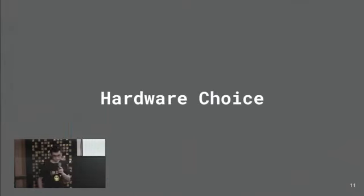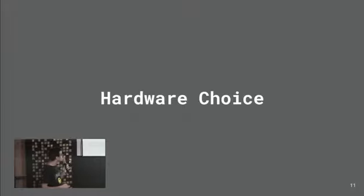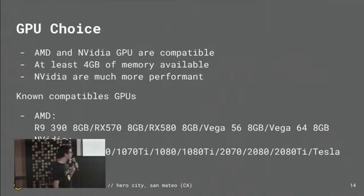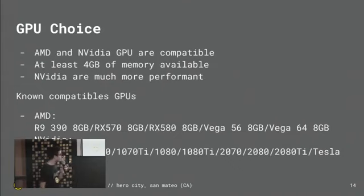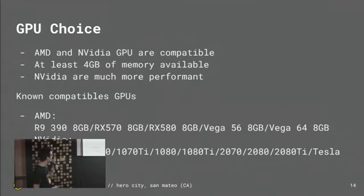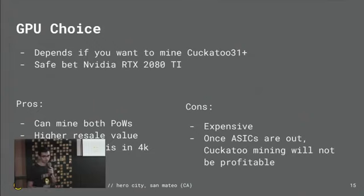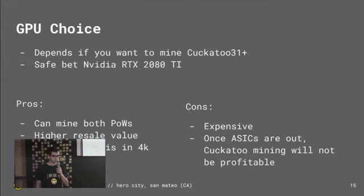Now we go to the hardware choice. Now that you know which proof of work you can mine and what kind of memory you need, let's look at hardware. For the CPU, forget it — it's not possible to mine with a CPU right now, it's a waste of time and energy. For GPU, you have a lot of choice: you can mine with AMD or Nvidia. Both work, but right now Nvidia is way more performant. The safe bet as of today is the Nvidia RTX 2080 Ti, because with this card you can mine both primary and secondary proof of work, so you can adapt to the market and always choose the most profitable option. Pros: mine both proofs of work, potentially higher resale value, can also game in 4K at 60 FPS. Con: expensive. And when ASICs are out for primary, GPU mining of primary will no longer be profitable.